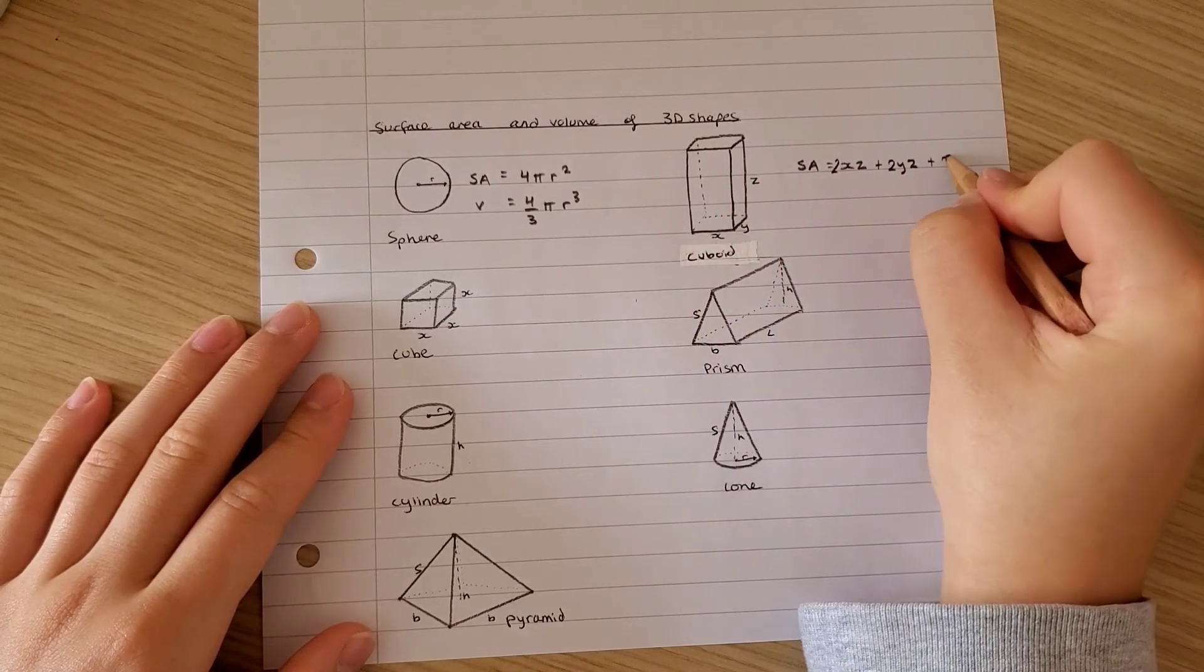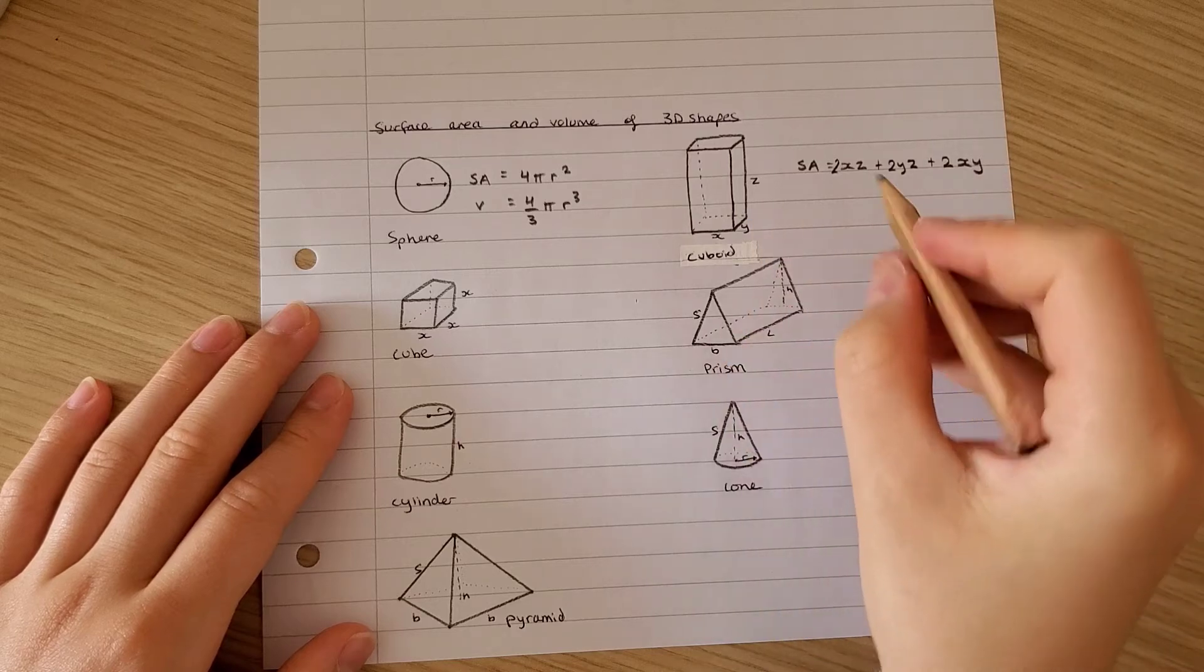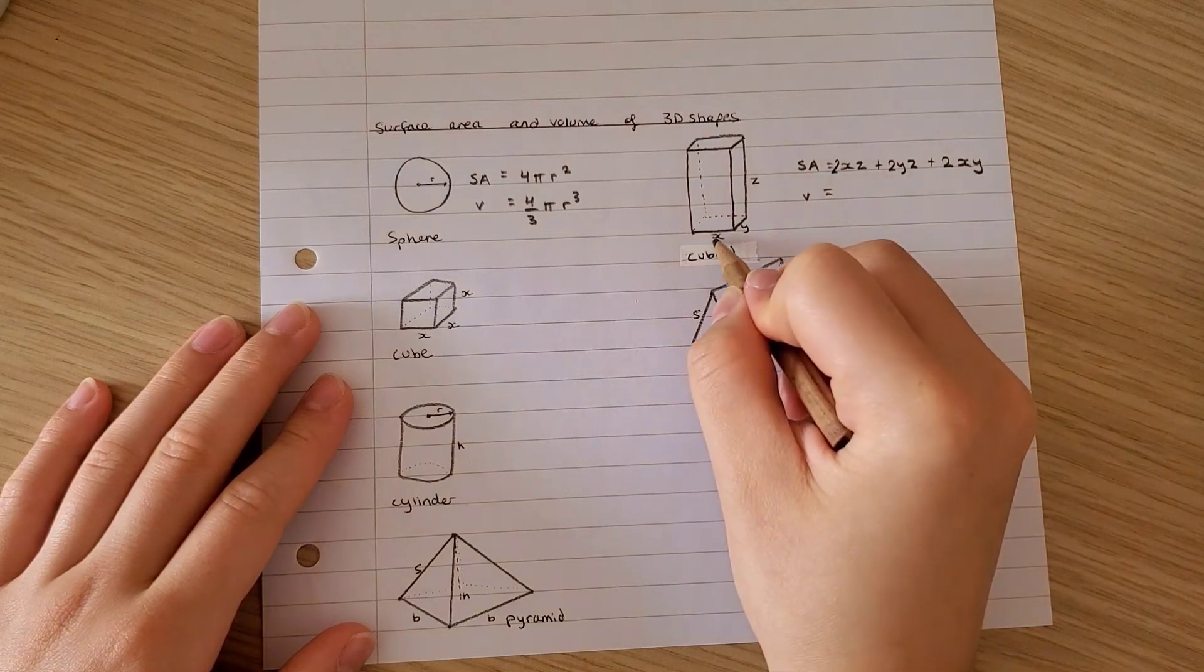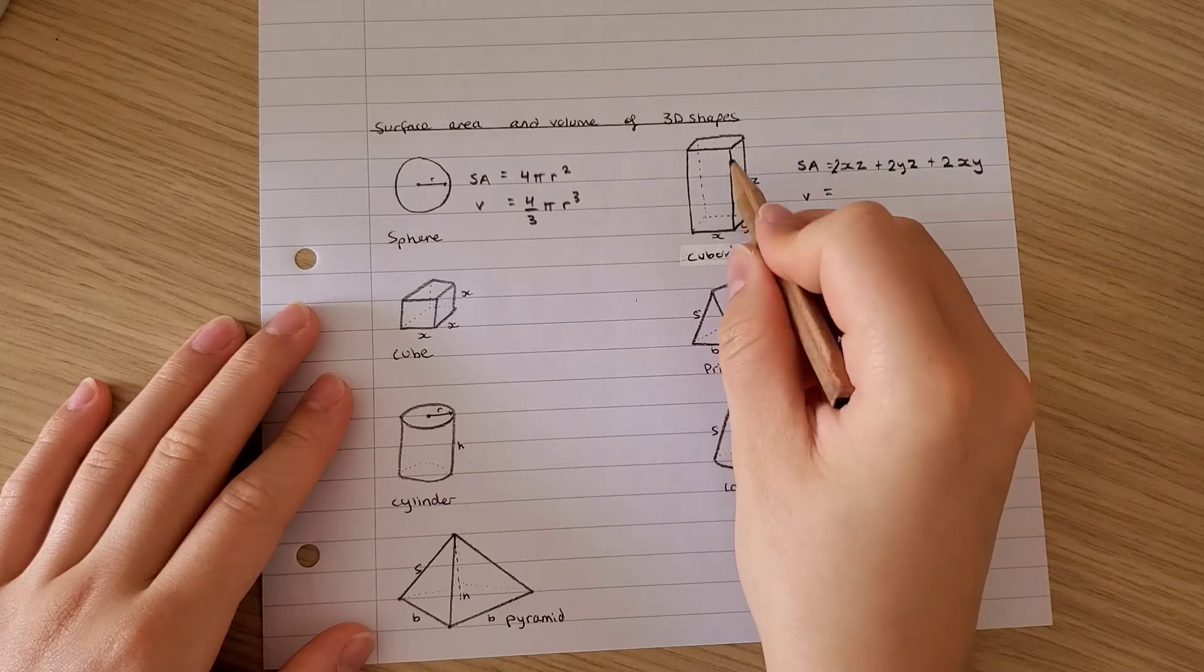So you have 2 times xy, and that would be the surface area. For the volume it is xy multiplied by z.